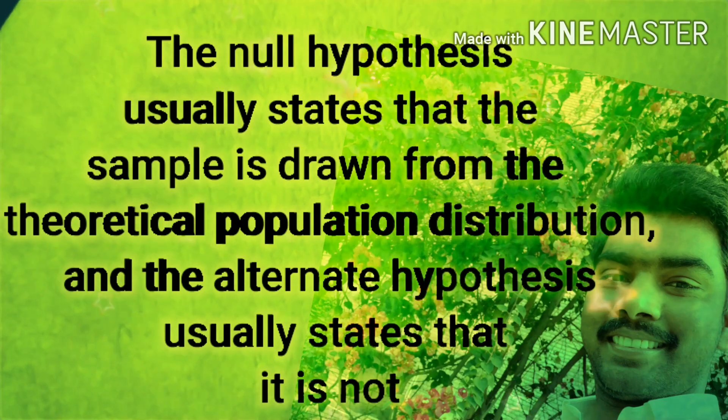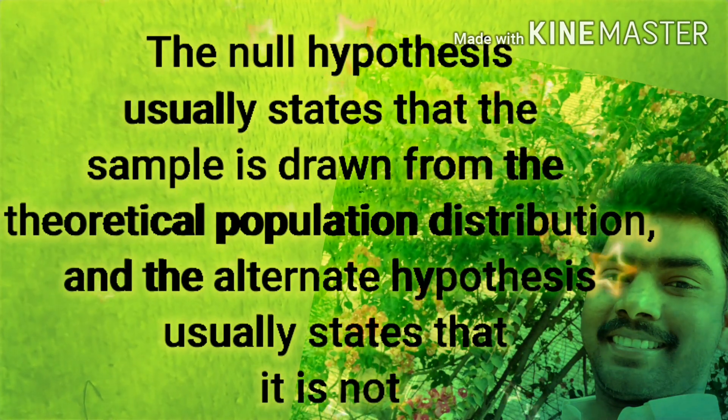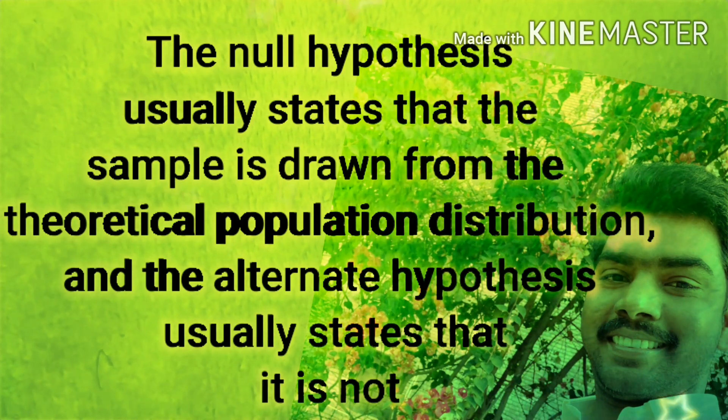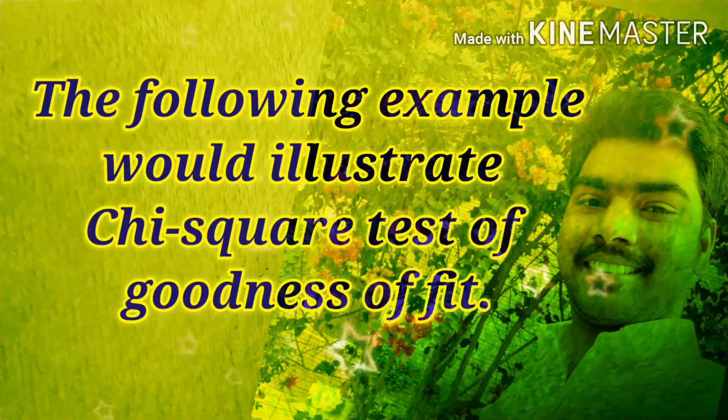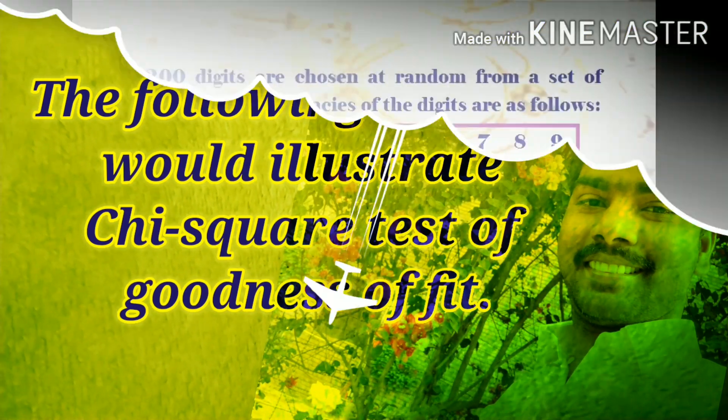The null hypothesis usually states that the sample is drawn from the theoretical distribution, and the alternative hypothesis usually states that it is not. The following example would illustrate chi-square test of goodness of fit.